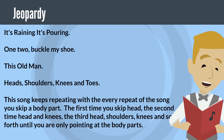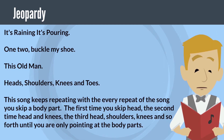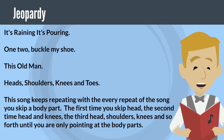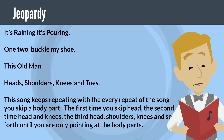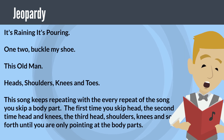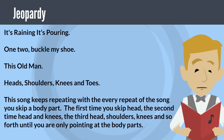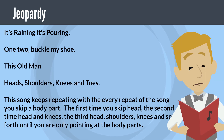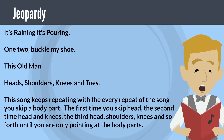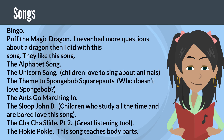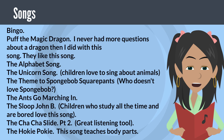'This Old Man.' 'Heads, Shoulders, Knees and Toes' — this song keeps repeating, and with every repeat you skip a body part. The first time you skip 'head,' the second time 'head and knees,' the third 'head, shoulders, knees,' and so forth until you are only pointing at the body parts. There are many other songs you can use; the ones I found most useful beyond the above include 'Bingo.'